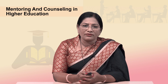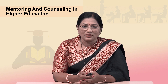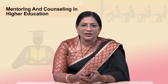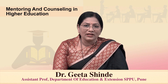If the mentor is playing the role of a parent, then the mentee should be a learner. If the mentor is trying to be a teacher, then the mentee should play the role of a reflector. Similarly, if the mentor is an inspirer, listener, or storyteller, then the mentee needs to play the role of a communicator. When the mentor plays the role of a role model, the mentee should be an interpreter for that particular role. There is thus a dependent relationship between the mentor and mentee — mentoring is the giving and receiving of wisdom within a relationship.